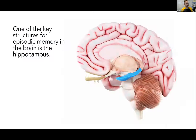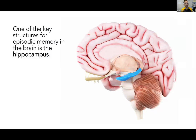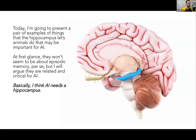Today I'm specifically going to focus on the hippocampus, which is a key structure for episodic memory — a structure embedded deep within the medial temporal lobes. I'll argue that even with small tasks that might seem trivial for AI, they're not actually as trivial as we might imagine. And ultimately, what current AI is missing is a hippocampus. It needs a hippocampus, basically.